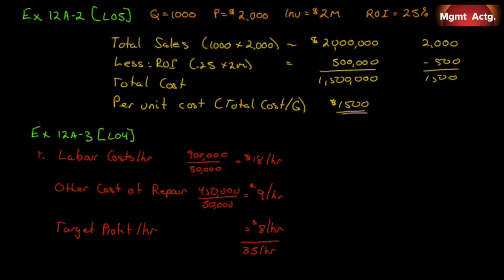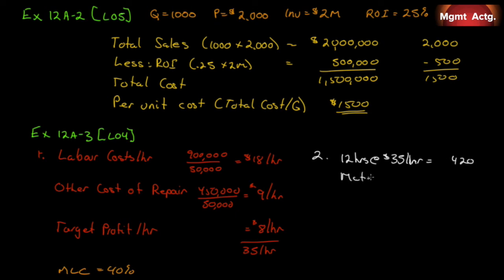The materials loading charge is simply 40% — no calculation needed, it's given directly. For part two: a mechanic completed a repair job requiring 12 hours and $100 in parts at invoice cost. Labor time: 12 hours × $35/hr = $420. Materials: $100. Loading charge: 40% × $100 = $40. Total billed for the job: $420 + $100 + $40 = $560.